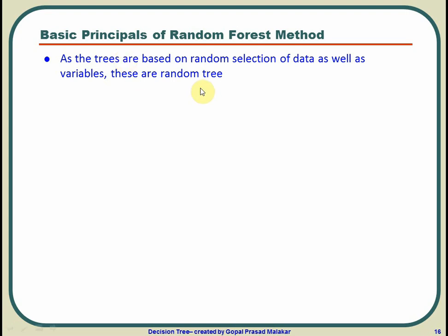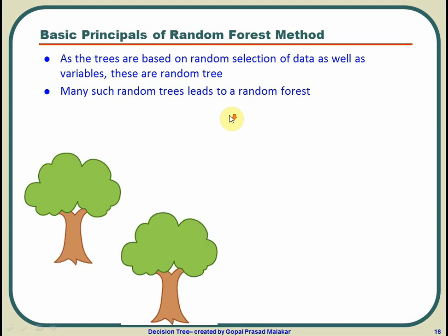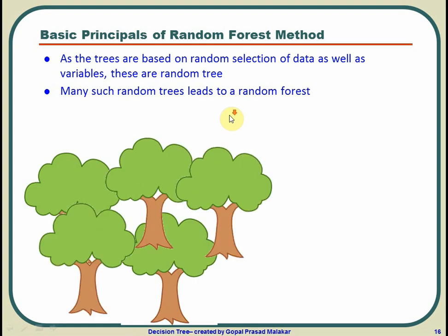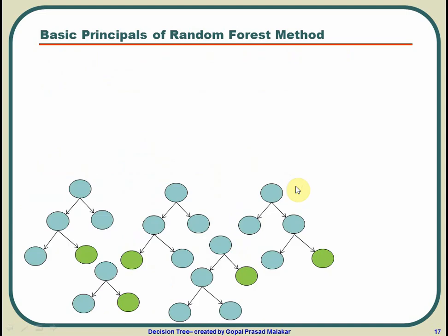That's why these trees are random trees. Now, when you have many such random trees, what you get is a forest. Like when you have many trees, you get a forest. Similarly, when you have many decision trees, you get a random forest.